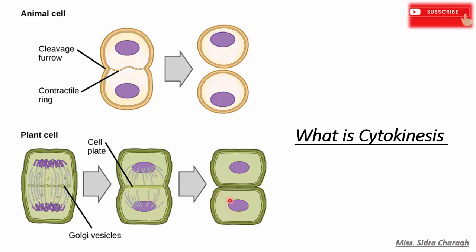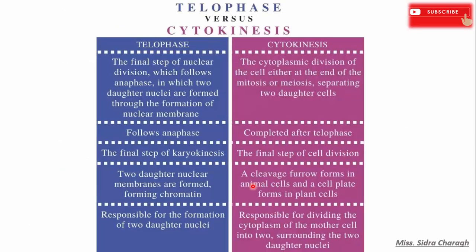Furthermore, cytokinesis begins at the beginning of cell division. Now let's see what are the main differences between telophase and cytokinesis. Telophase is the final step of nuclear division which follows the anaphase step, in which two daughter nuclei are formed through the formation of the nuclear membrane, whereas cytokinesis is the cytoplasmic division of the cell either at the end of mitosis or meiosis, separating two daughter cells.